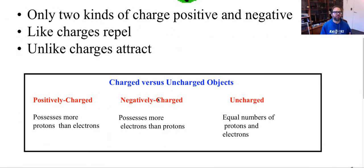Basically, this is what we have to think of. Positively charged possesses more protons than electrons. Anything that is negatively charged possesses more electrons than protons, and an uncharged thing has an equal number of protons and electrons.